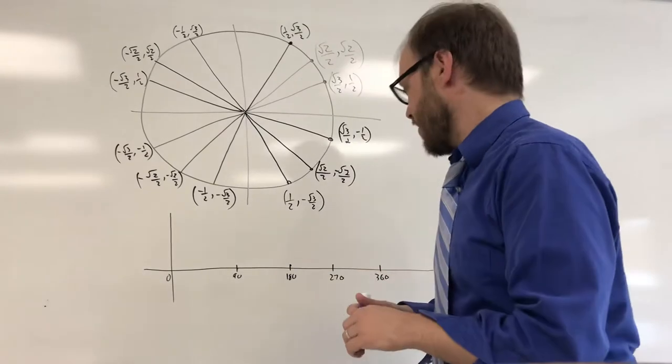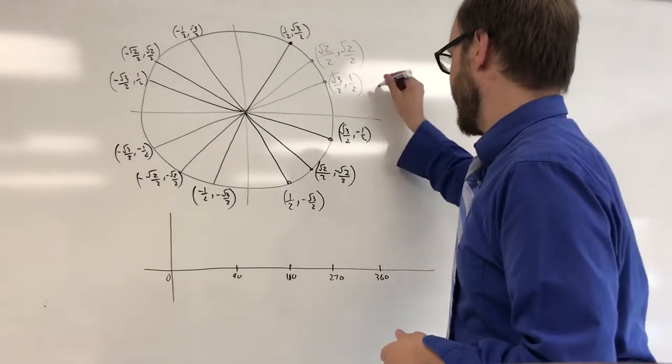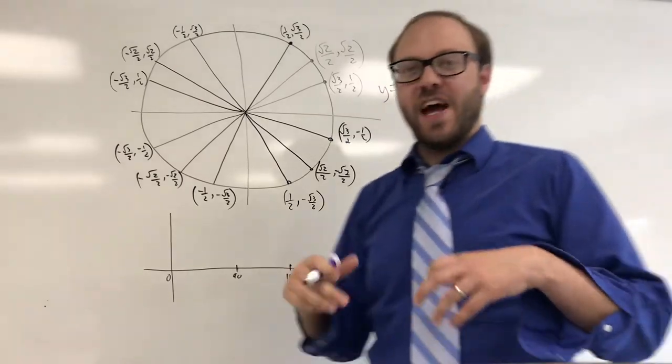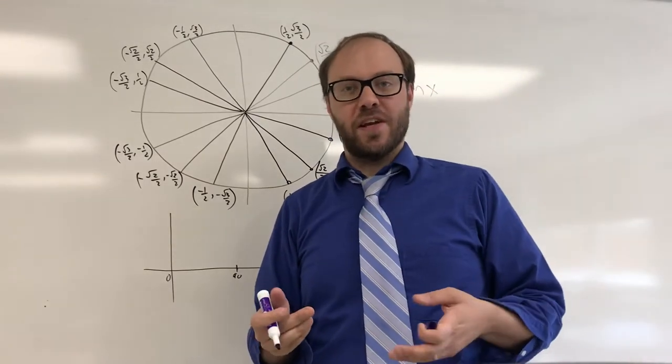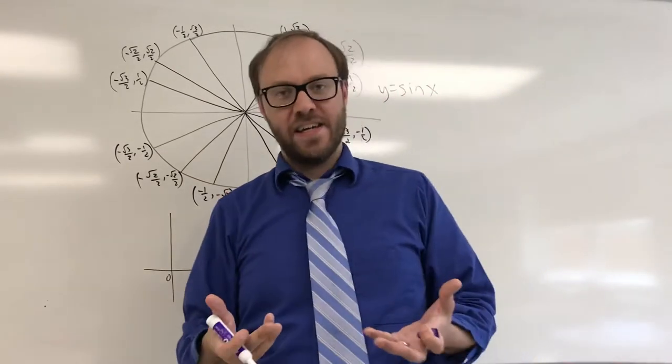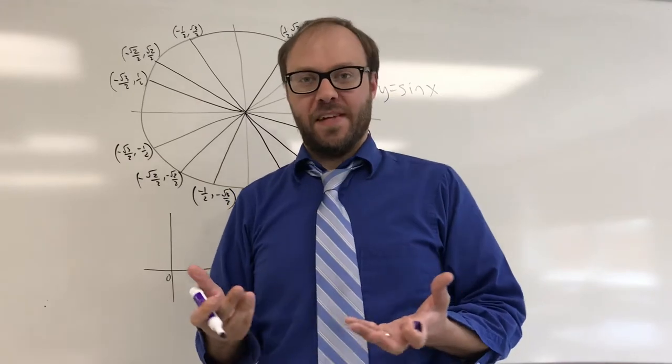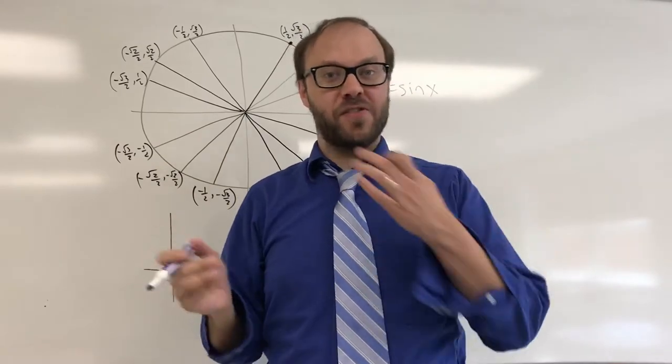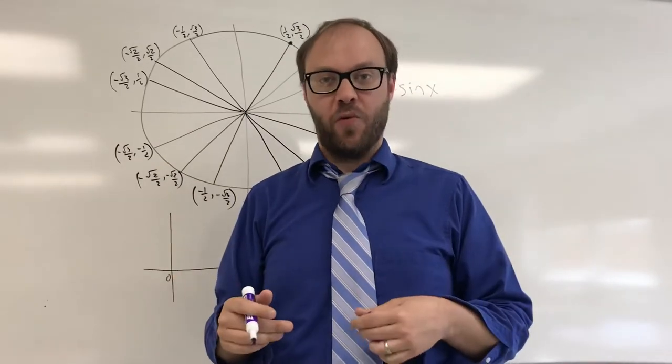Here's the idea. So I want to graph the sine function, y equals sine of x. If you remember, the sine function is always going to be the y-coordinate on the unit circle. It's technically the opposite side over the hypotenuse, but because the hypotenuse is always 1 for the unit circle, it's just the y-coordinate.